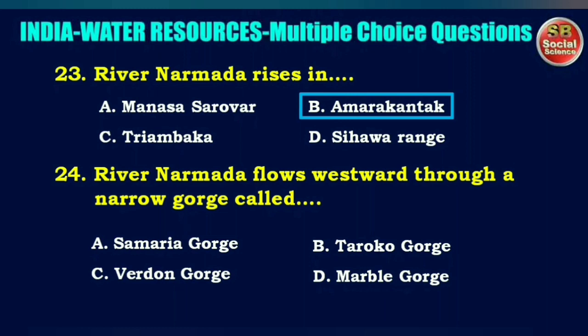River Narmada flows westward through a narrow gorge called — options are Samaria Gorge, Tarako Gorge, Wadon Gorge, or Marble Gorge. The right answer is option D: Marble Gorge.